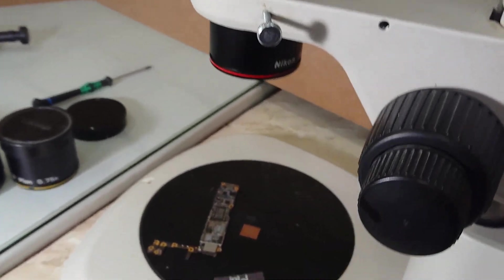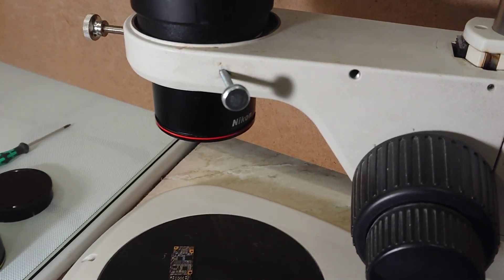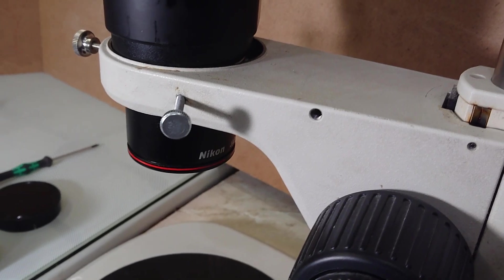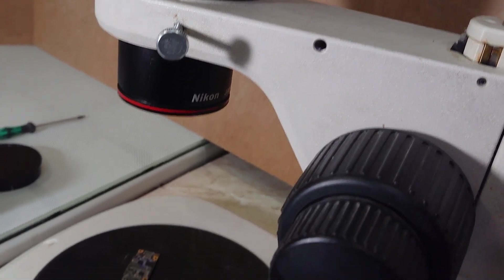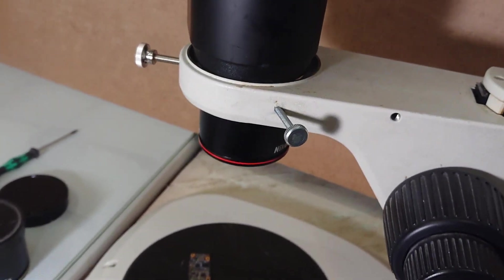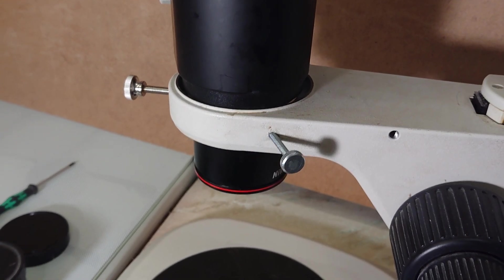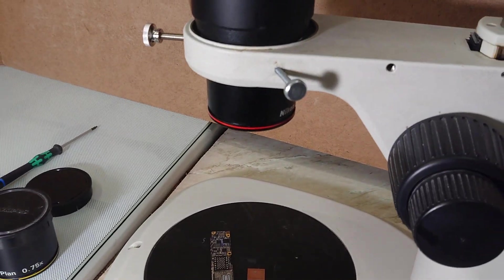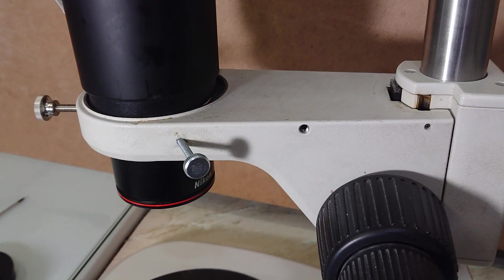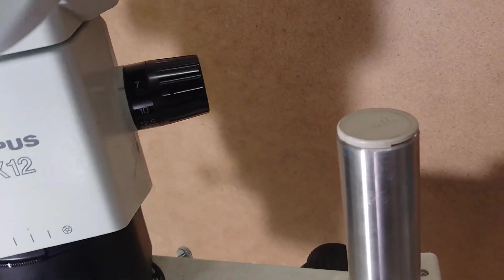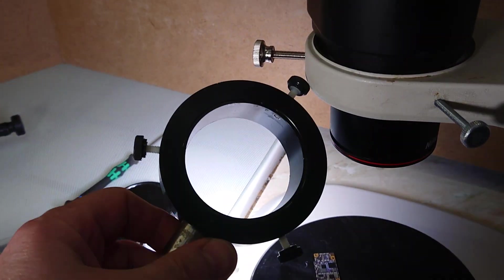So let's start with our first installed Nikon 0.5 objective with our 153 millimeters working distance. And to do it, I need to attach my fiber optic ring light here.